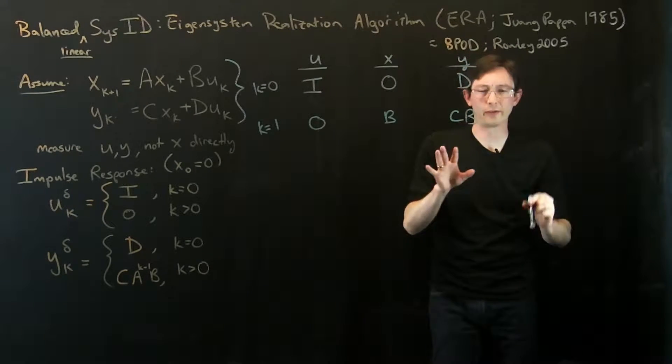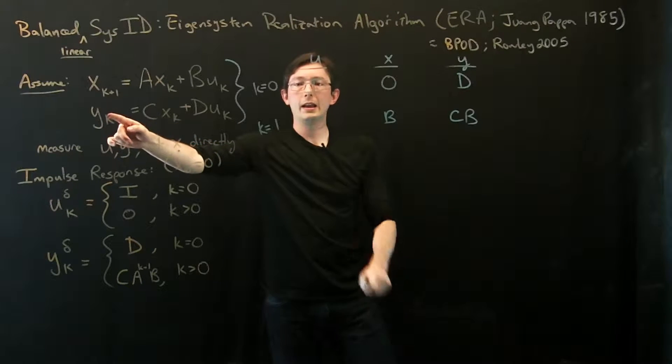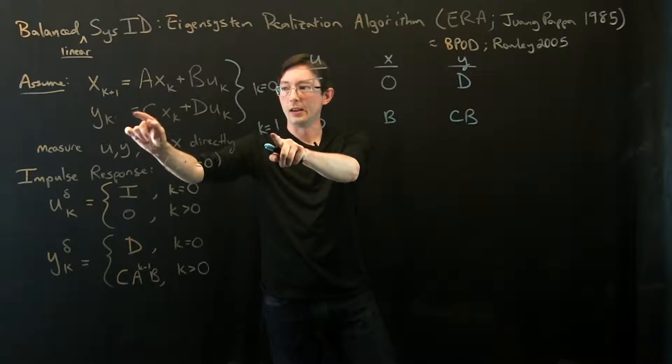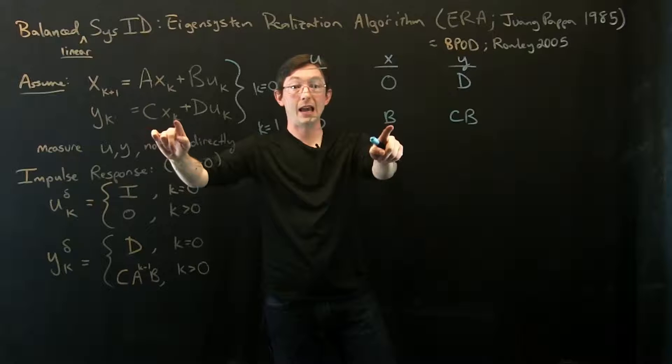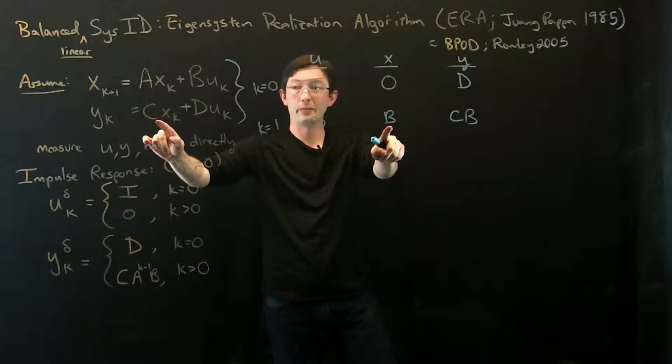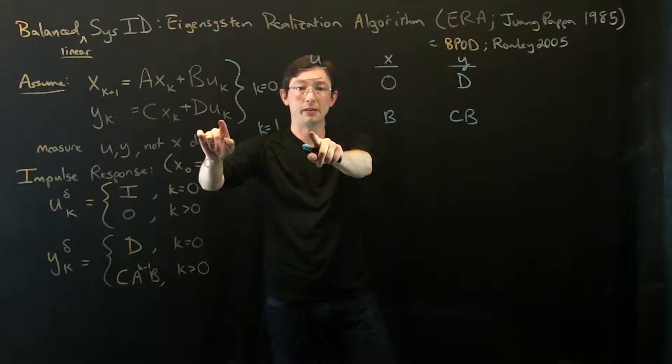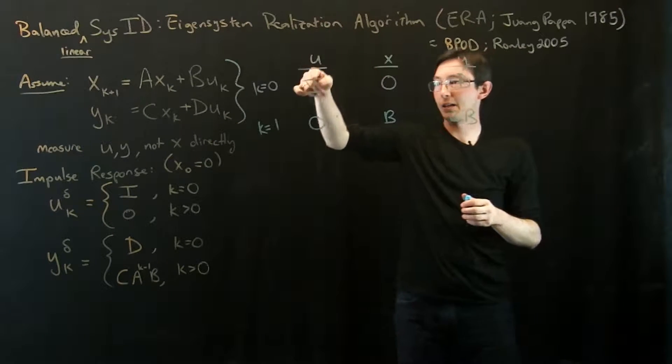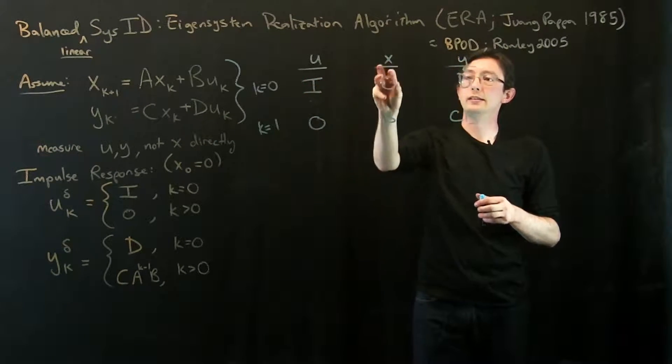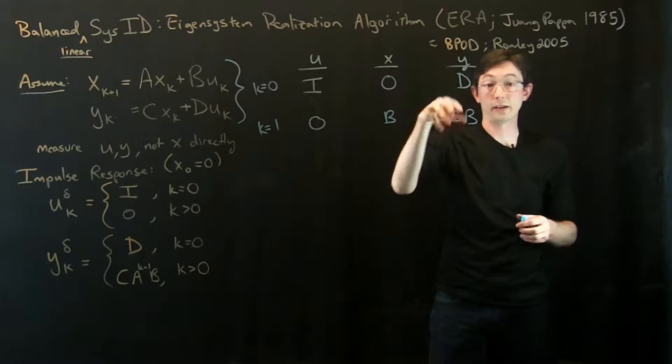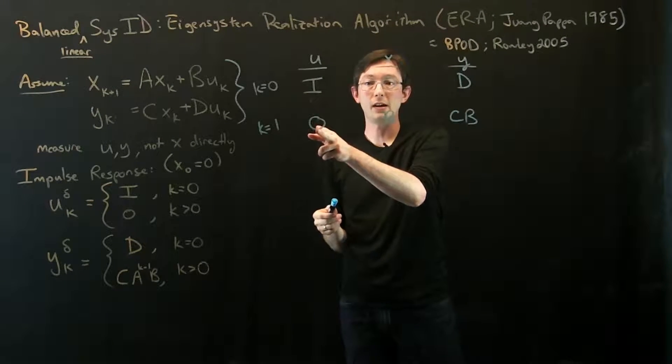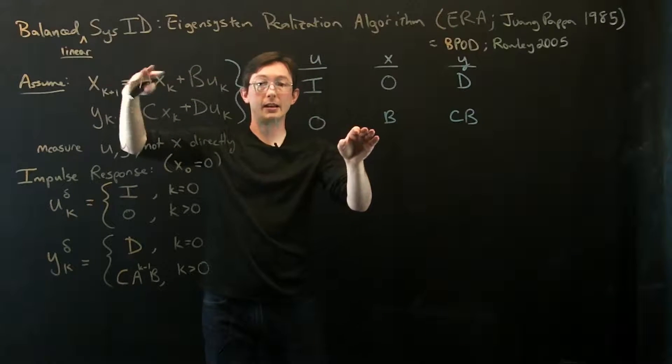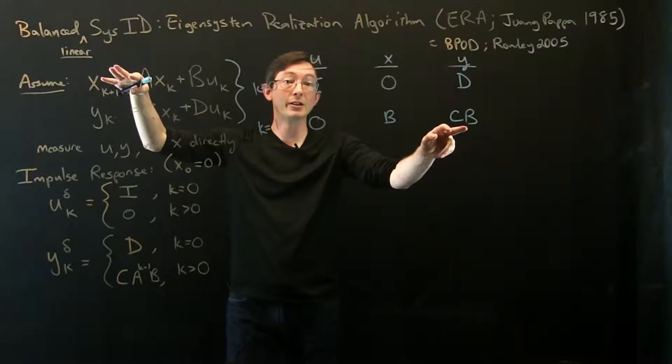Let me just say that one more time. That was fast. y at k1 is C times x at k1, which is B, C times B, plus D times 0, because u is off now. So y is CB. I kick my system, I get an impulse, 0 initial condition, that feeds directly through in this D matrix, then my impulse turns off, and now all that's happening is that impulse is trickling through the dynamics, and I'm measuring that.